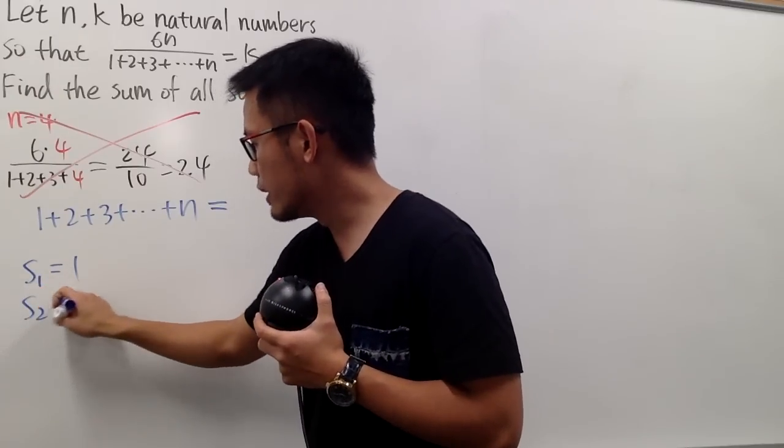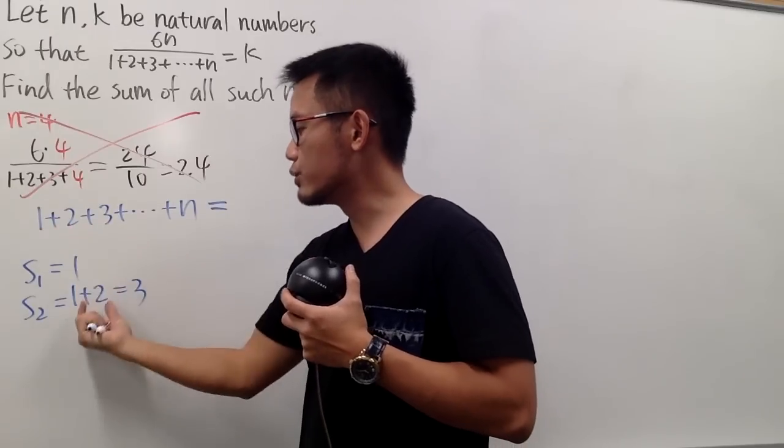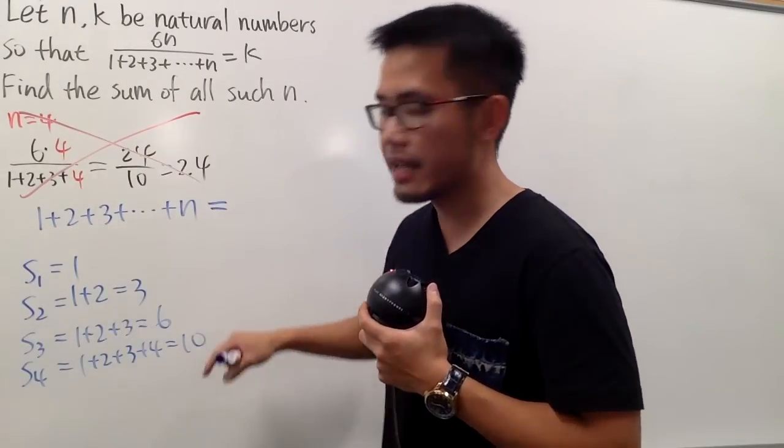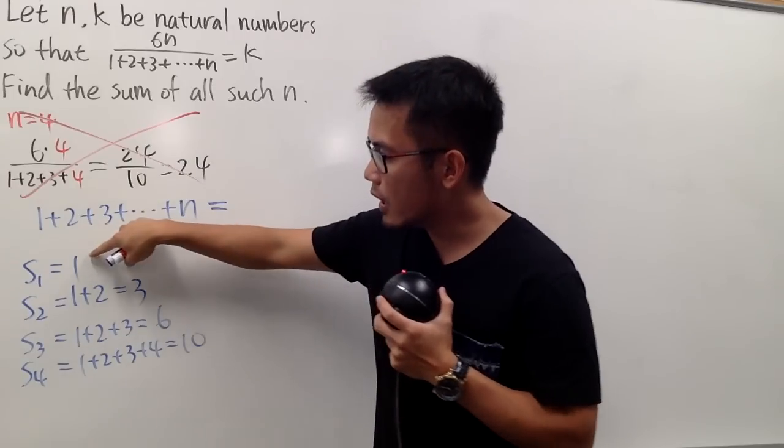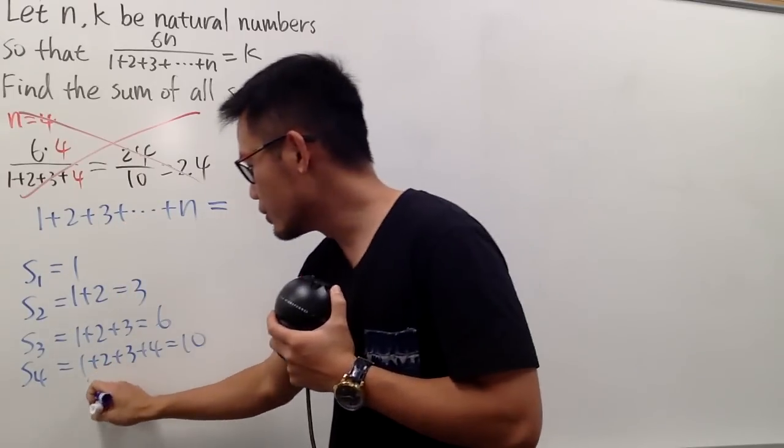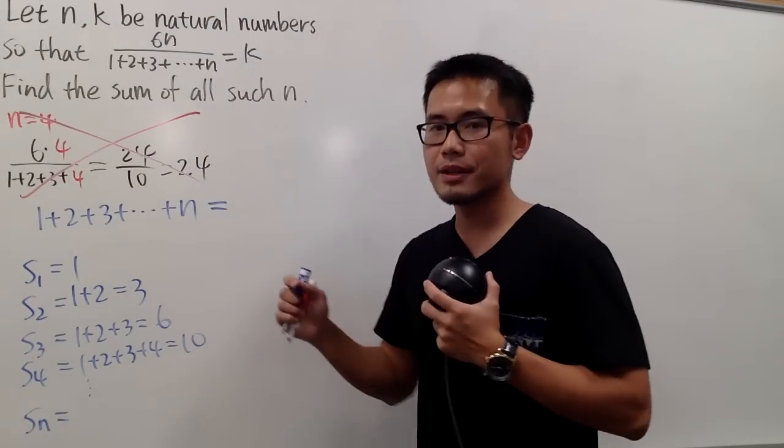So let me write down S1 to be just 1, right? That means the first term. S2 means 1 plus 2, which is going to be 3. You add the first two terms together like this. And if you look at the result, 1, 3, 6, 10, our goal is to figure out a formula for these numbers. So that's going to give us the Sn formula.